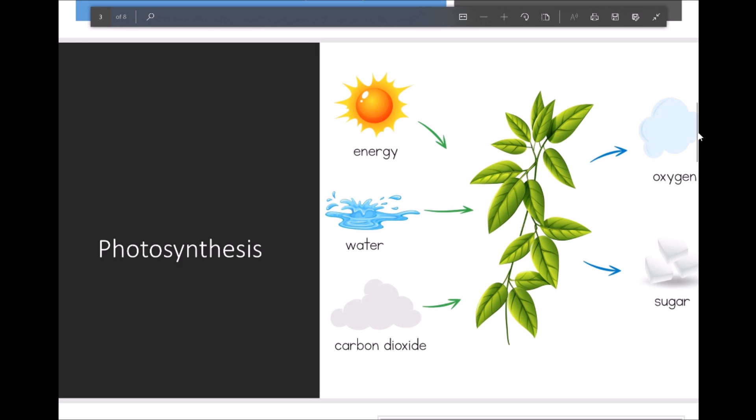Photosynthesis is the process where plants convert sunlight, water and carbon dioxide gas into oxygen and sugar.